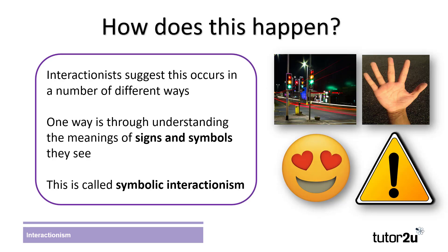Interactionists suggest that this happens in a number of ways. In any social context, we look for signs and symbols that help us to understand how we should behave, and what behaviours to expect from others. Interactionists suggest that society is complex, with any given situation having multiple interpretations of how people are expected to behave. For example, when driving along a road, people will look for signs and symbols to direct them, tell them how fast they should drive, and when to stop. These signs are social constructions — made by people to help others understand social norms.